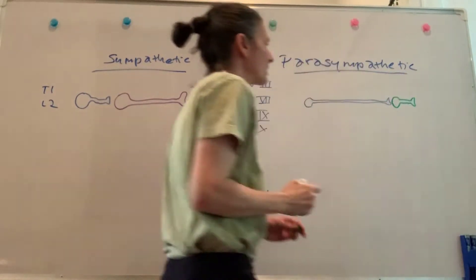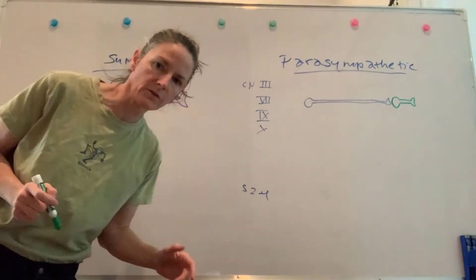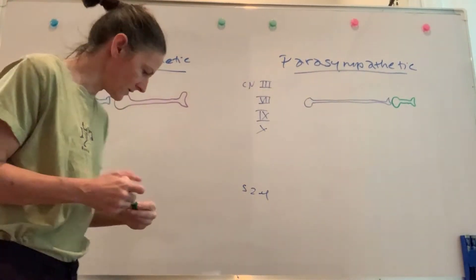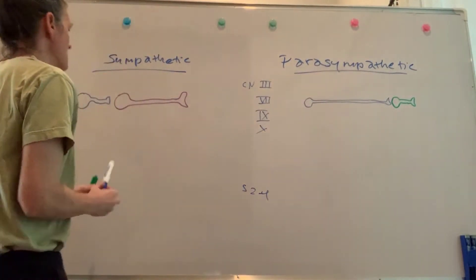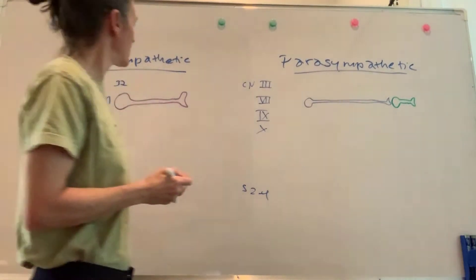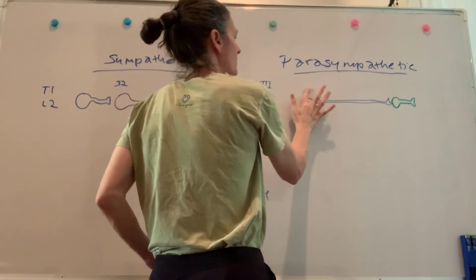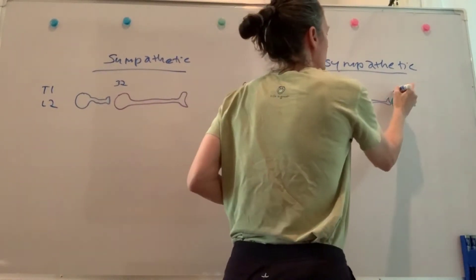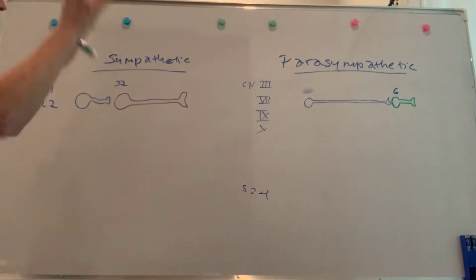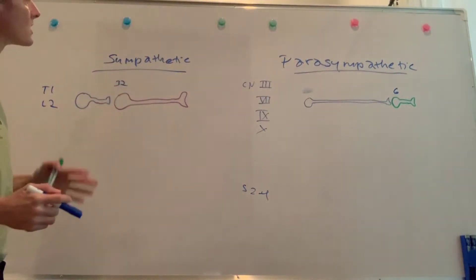The degree of divergence is also quite different. In the sympathetic division, a pre-ganglionic fiber can have collaterals innervating up to 32 ganglionic neurons. In the parasympathetic division, a pre-ganglionic neuron innervates up to about 6 ganglionic neurons. So in the sympathetic division, the pre-ganglionic neuron can diverge all over the place and innervate up to about 32.